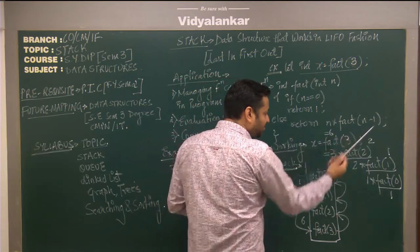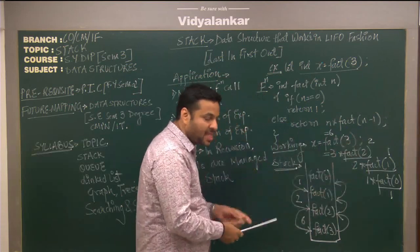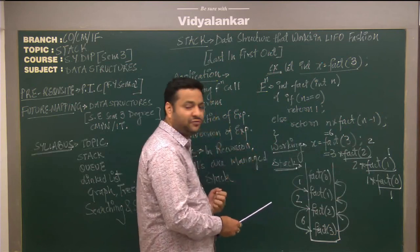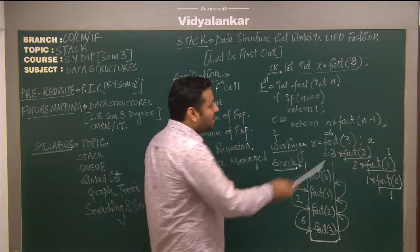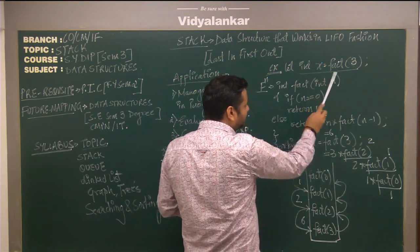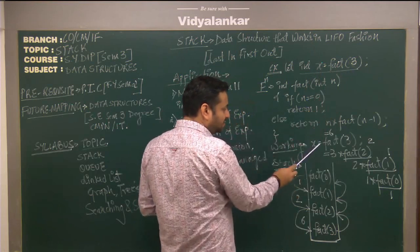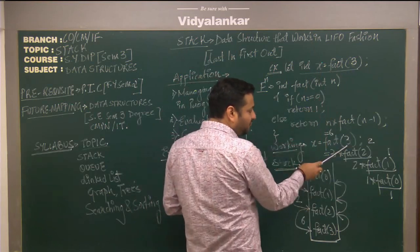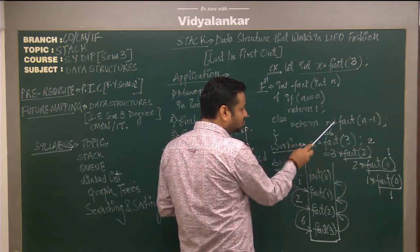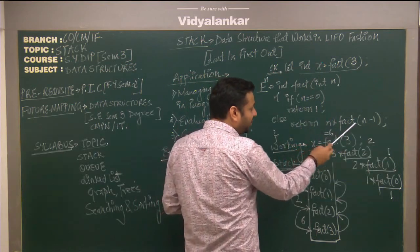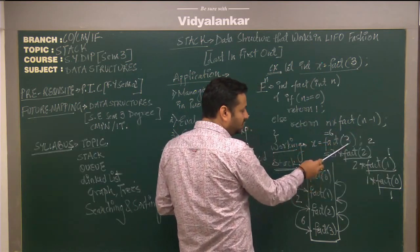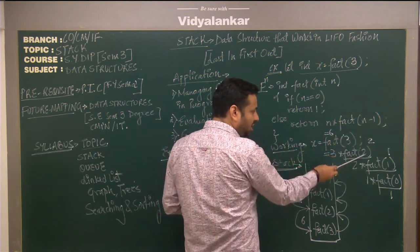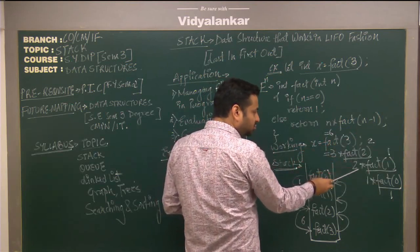Let us trace this function call for the value n equals 3. We have x equal to fact(3). The value of n is 3, which is not 0, so it returns n into fact(n-1), giving us 3 into fact(2). Now for n equals 2, it returns 2 into fact(1).